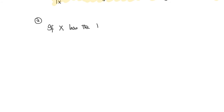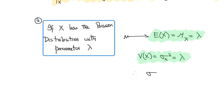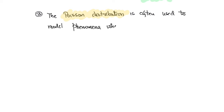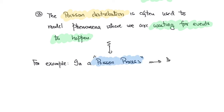If a random variable x has the Poisson distribution with parameter lambda, then the expected value of x equals lambda and the variance of x is also lambda. In this case, the standard deviation is square root of lambda. The Poisson distribution is often used to model phenomena where we are waiting for events to happen or trying to count the number of events in a given time interval. For example, in the case of a Poisson process, we use the Poisson distribution to calculate the probability of the number of occurrences in a given time interval t.